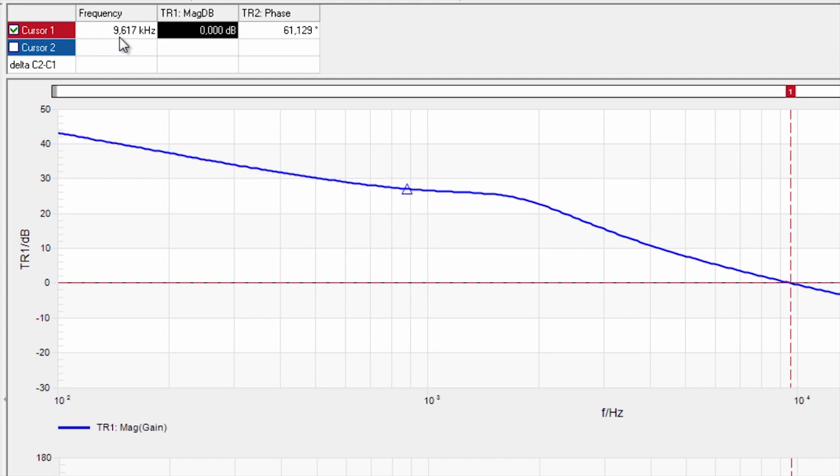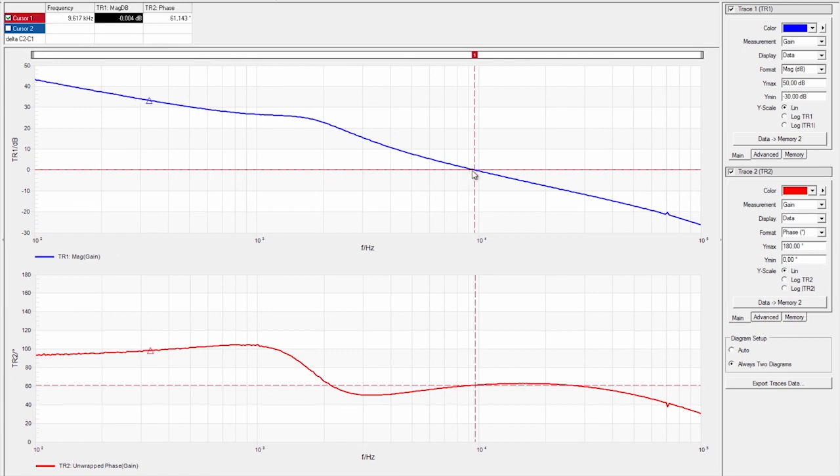I've got a nice bandwidth, 10 kilohertz crossover frequency. Over here on this box the software is giving me my phase margin. I've got 60 degrees of phase margin.